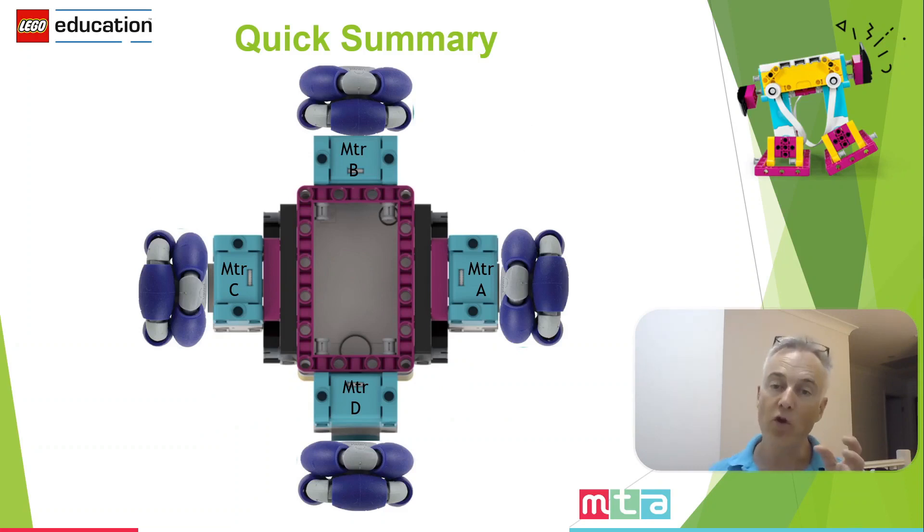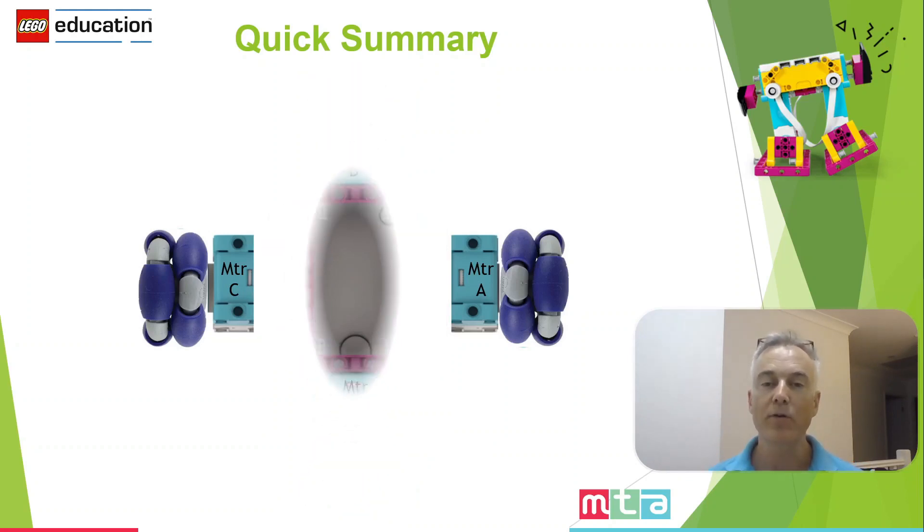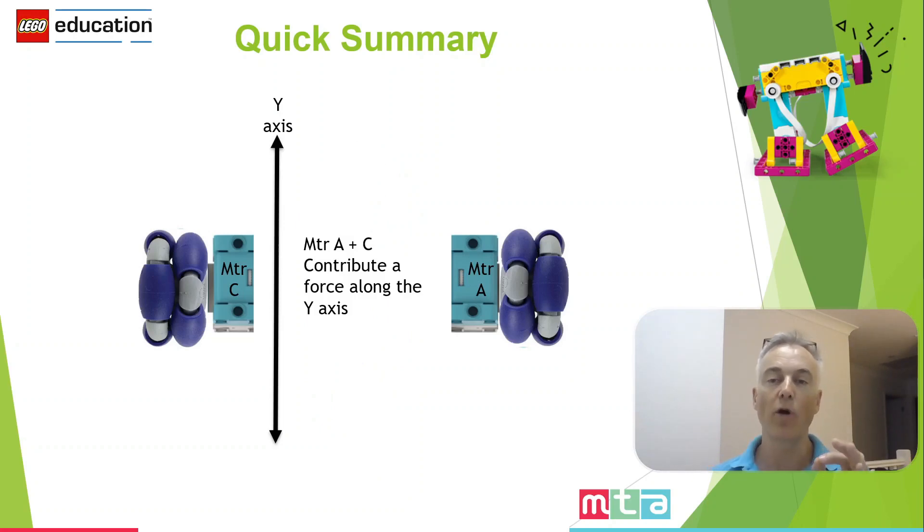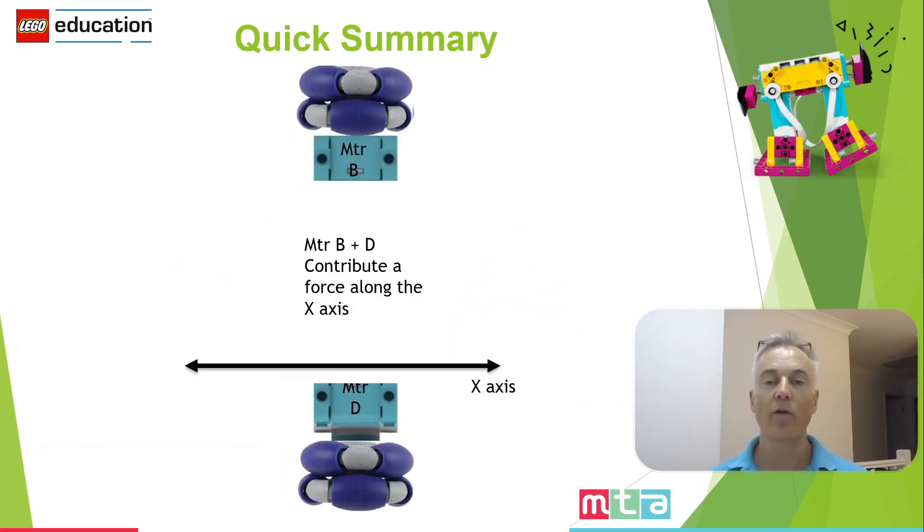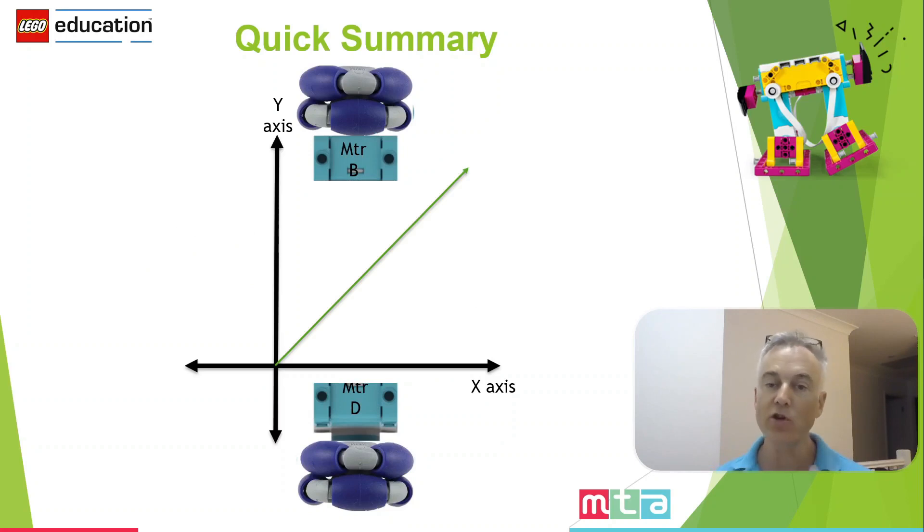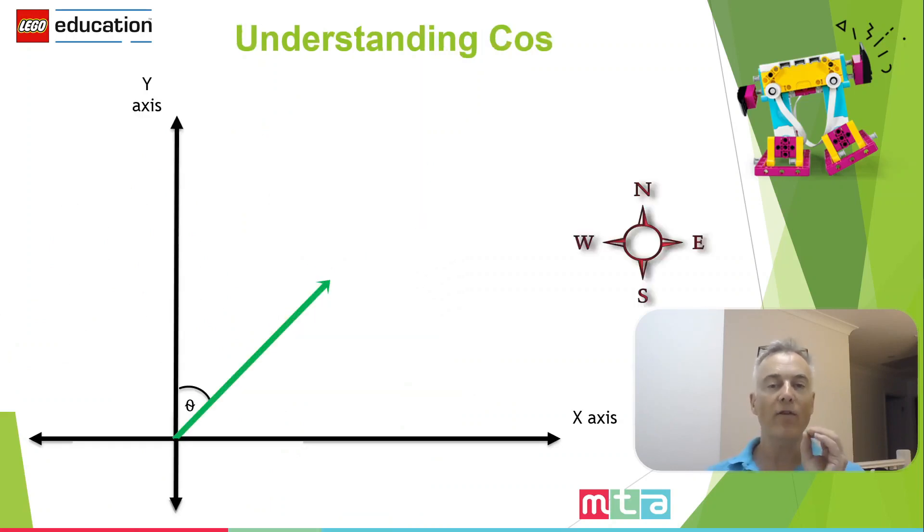Alright for a quick overview we've got our omnidirectional robot which can move in two-dimensional space so it can move forwards and backwards or left and right or any combination in between. To be precise we're using motors A and C to move the robot forwards and backwards along the y axis or relative north and south. In contrast we've got motors B and D allow us to move the robot left and right along the x-axis or relative east and west. So together we're going to use the cos function to make a speed and direction calculation for each of the four motors which in combination will allow us to drive the robot in any of the 360 degrees of direction.